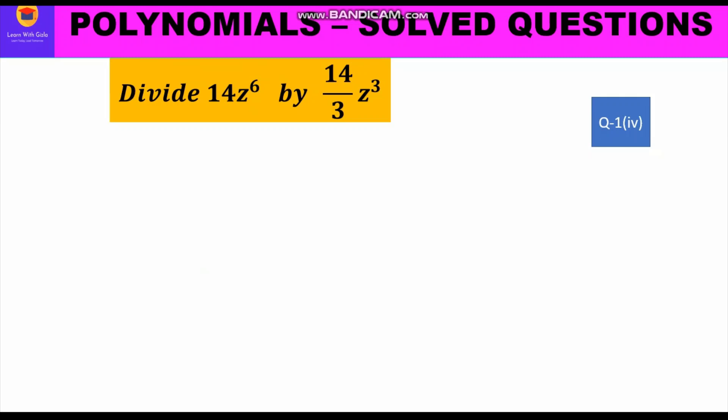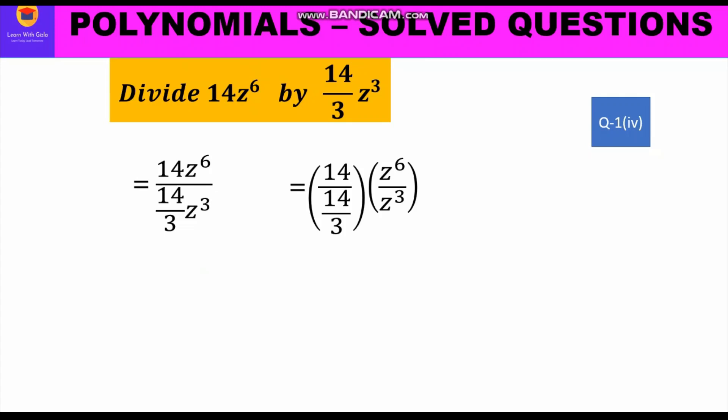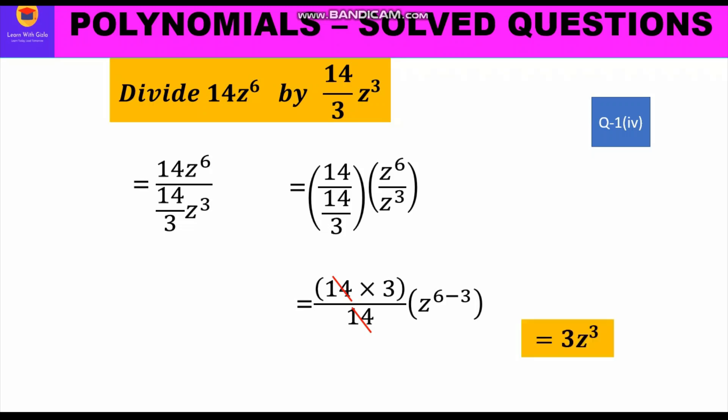Now let us move to the fourth part. It is given: divide 14z raised to power 6 by (14/3)z cube. We write 14z⁶ upon (14/3)z cube, then separate the coefficient: 14 upon (14/3) into z⁶ upon z cube. For a fraction divided by a fraction, we multiply by the reciprocal, giving 14 into 3 upon 14 into z raised to power 6 minus 3. The 14s cancel and z⁶⁻³ is z cube, so we are left with 3z cube.